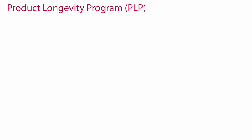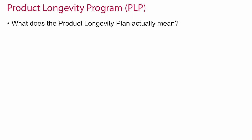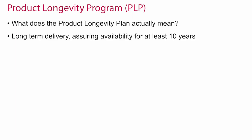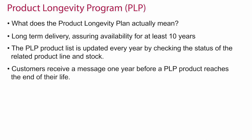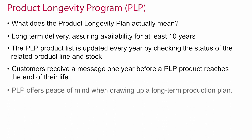Solution 1: What does the product longevity program actually mean? It assures the availability of specific components for at least 10 years. A list of these components is updated every year by checking the commercial status of the related product line and stock. The program provides a notification to customers at least one year before the end of production in case a component becomes end-of-life. The product longevity program offers peace of mind when drawing up a long-term production plan.